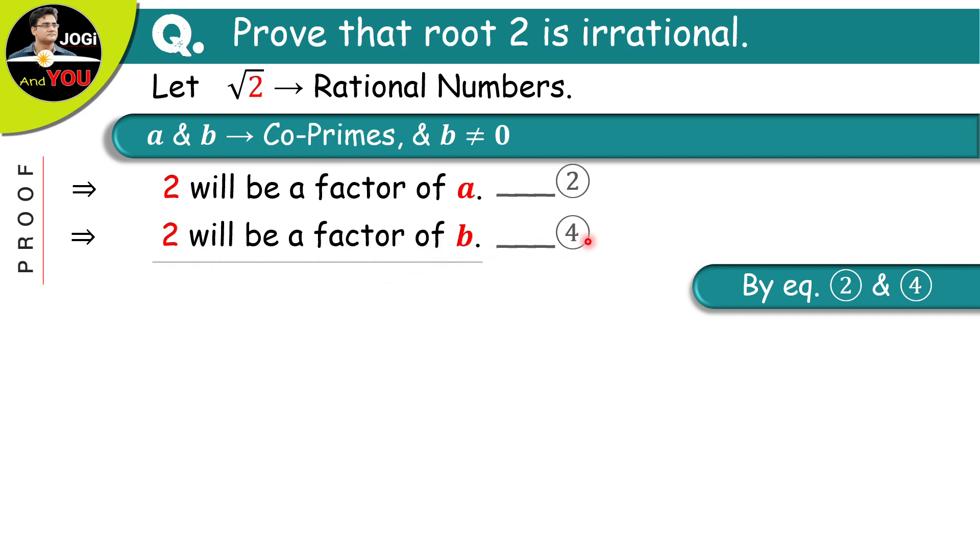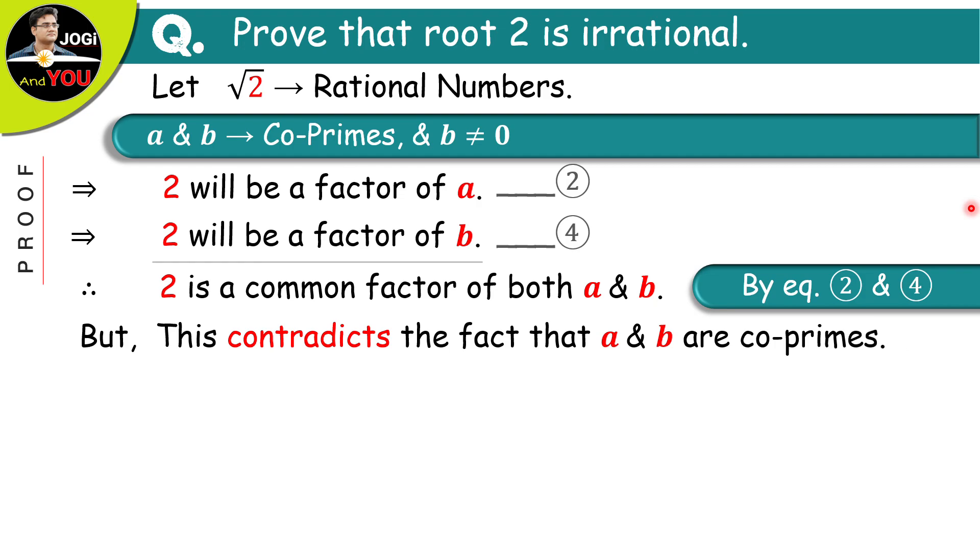So, here we can say that 2 is a common factor of both a and b. But, it is an impossible result because this contradicts the fact that a and b both are coprimes. And this contradiction arises by assuming that root 2 is a rational number.